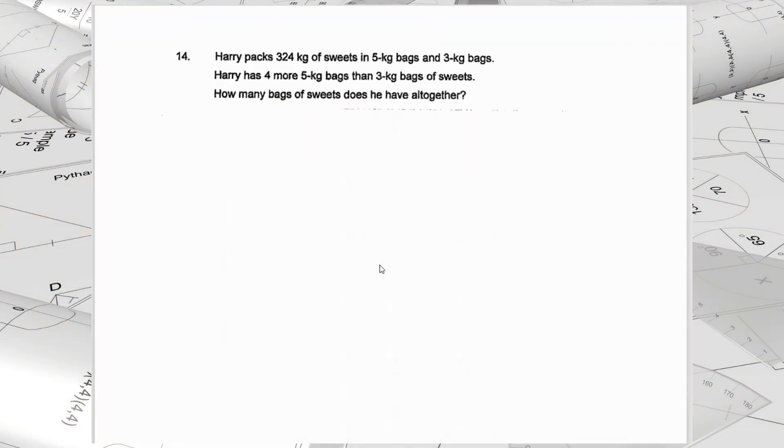Question 14. Harry packs 324 kg of sweets in 5 kg bags and 3 kg bags. Harry has 4 more 5 kg bags than 3 kg bags of sweets. How many bags of sweets does he have altogether?